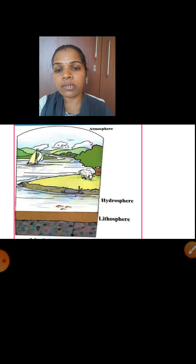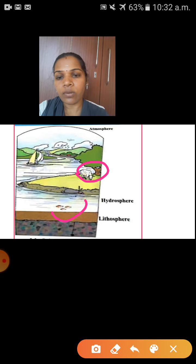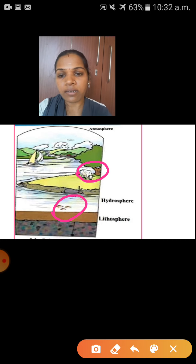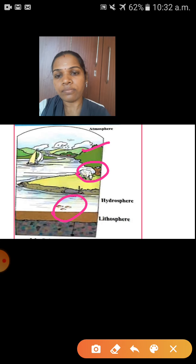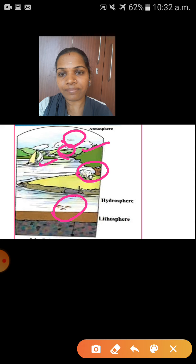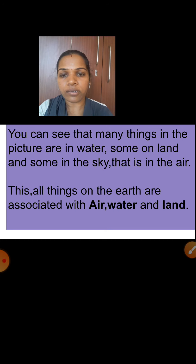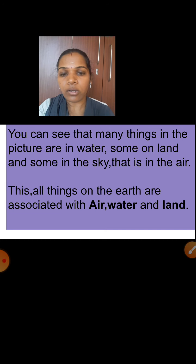Children, see here — I have given one picture in this slide. Observe this picture. Here you can see a cow, some fishes are in water, clouds, an aeroplane, and a boat. You can see that many things in the picture are in water, some on land, and some in the sky — that is in the air. These all things on the earth are associated with air, water and land.